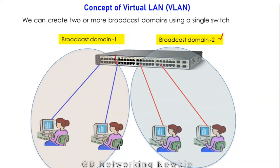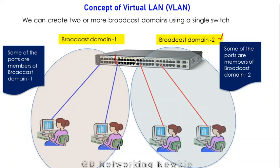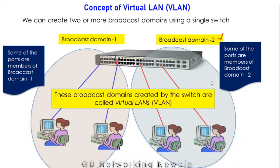So with a single switch, some ports are members of broadcast domain one and some ports are members of broadcast domain two. In this way we have created two broadcast domains, which are actually creating two LANs — two local area networks. When we create these multiple broadcast domains using a switch, those are called Virtual LANs.